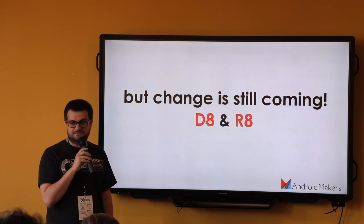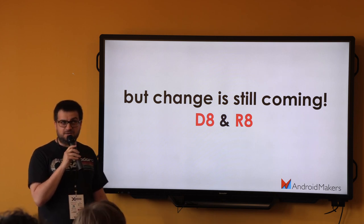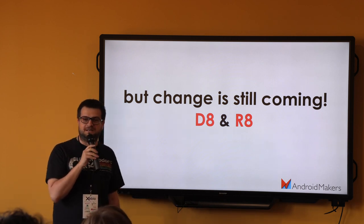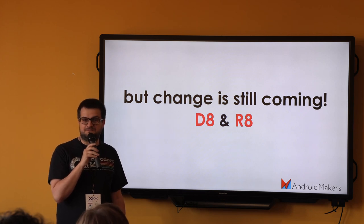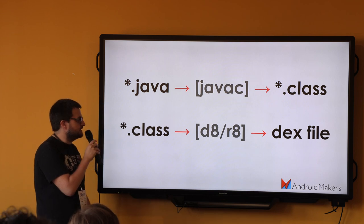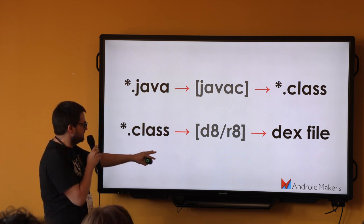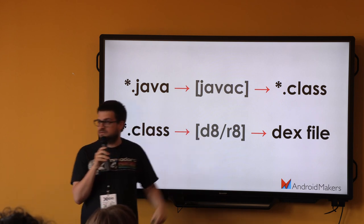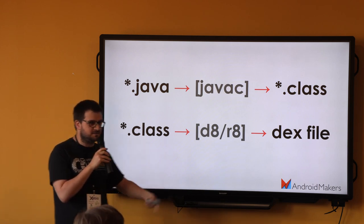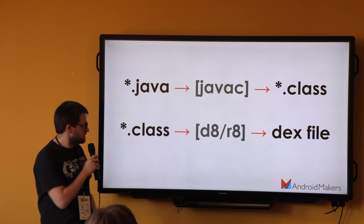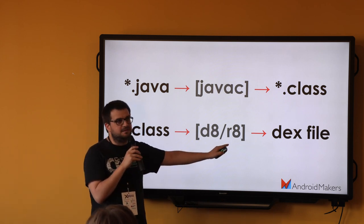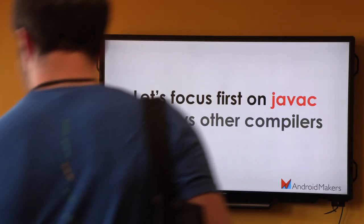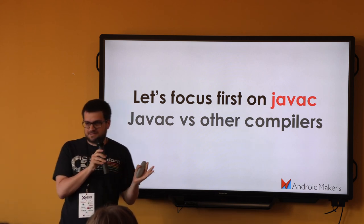Is anyone using D8 already? You have to enable it in your Gradle file, otherwise it's not enabled. D8 is still combined with Java C, and then D8 or R8 is basically getting the class file and converting it to the DEX file. They both accept class files, DEX files, ZIP, AAR, JAR, whatever. R8 is the obfuscation and minifier, and D8 is the DEX file compiler. Let's focus on Java C, because everything starts with Java C.